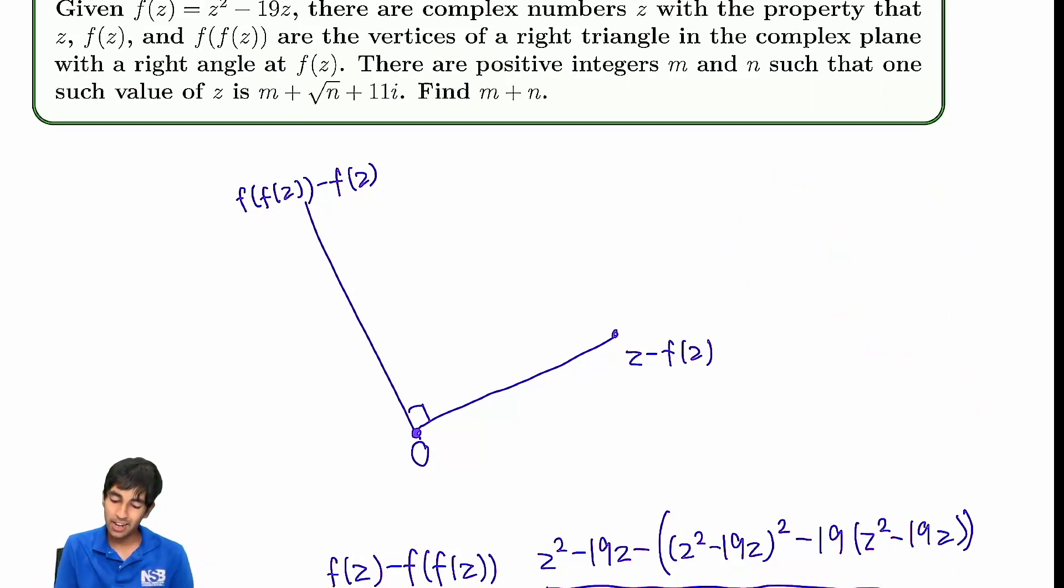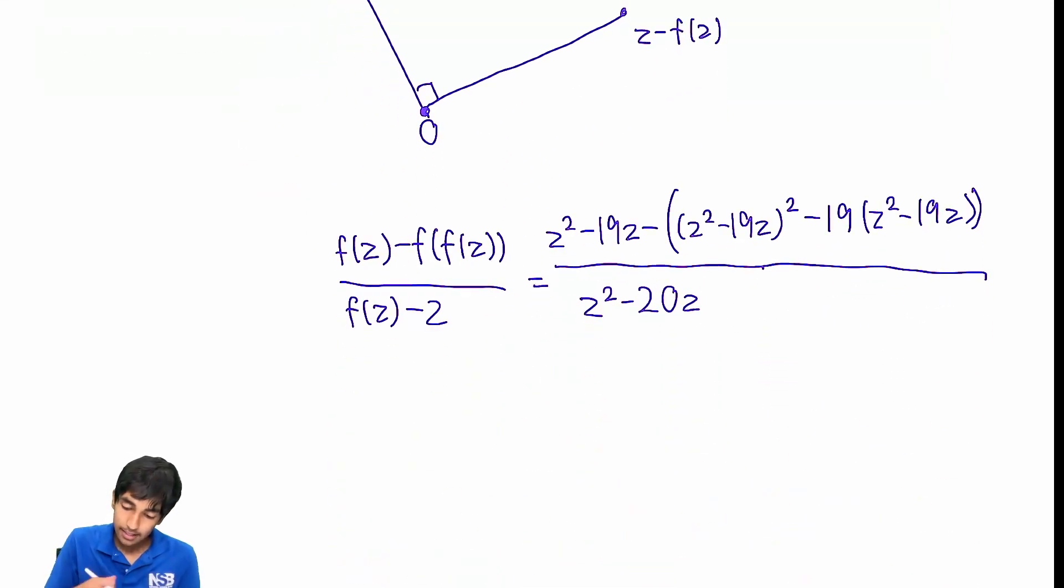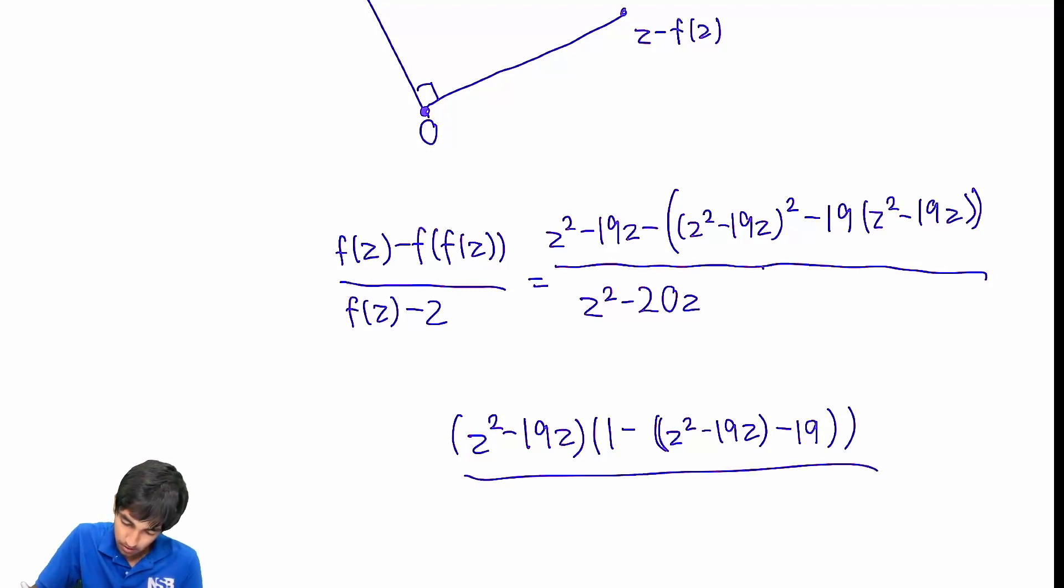So now what do we do with this? We can try and expand it, but that's going to be really messy. Here's something to notice: we can factor z squared minus 19z out of the numerator. And in doing that, we get one minus, and then we get z squared minus 19z, then minus 19, just 19. And that just becomes 20 minus z squared plus 19z. So that's 20, or let's write it as negative z squared plus 19z plus 20.